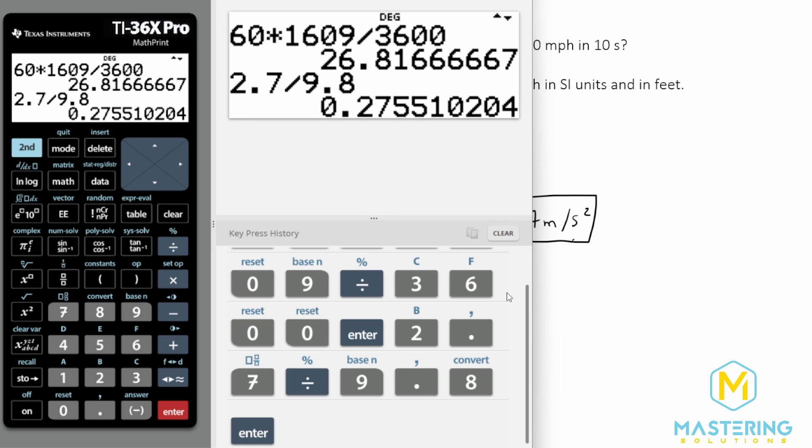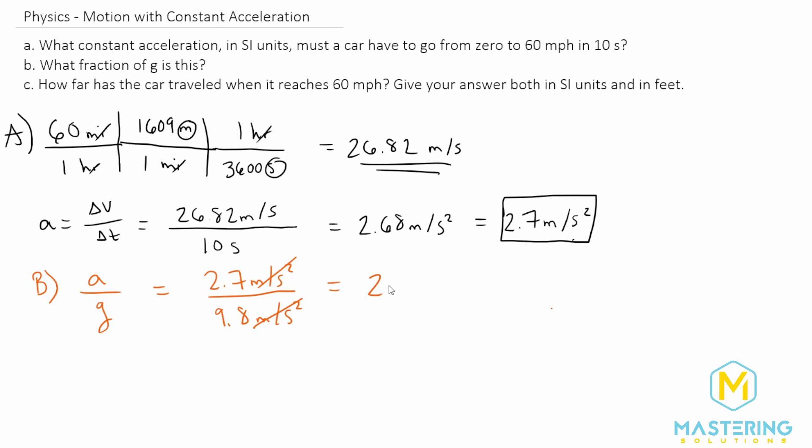So we have 2.7 divided by 9.8 gives us 0.275. So it's essentially 27—you could round it to 28 percent. So we'll just say 27.5 percent of gravity, or 27.5 percent of g.